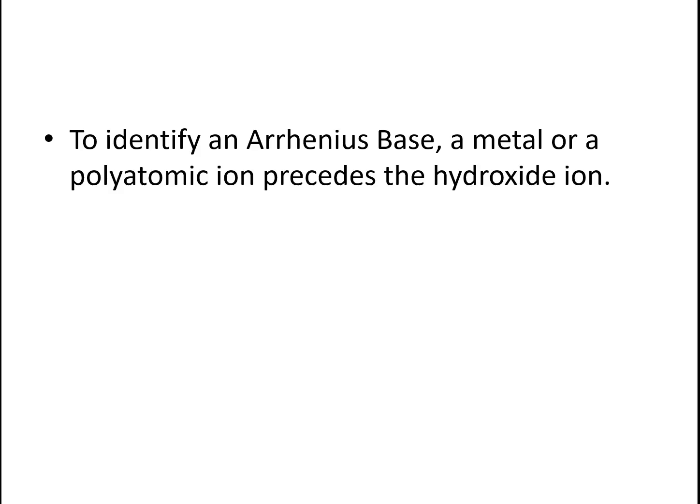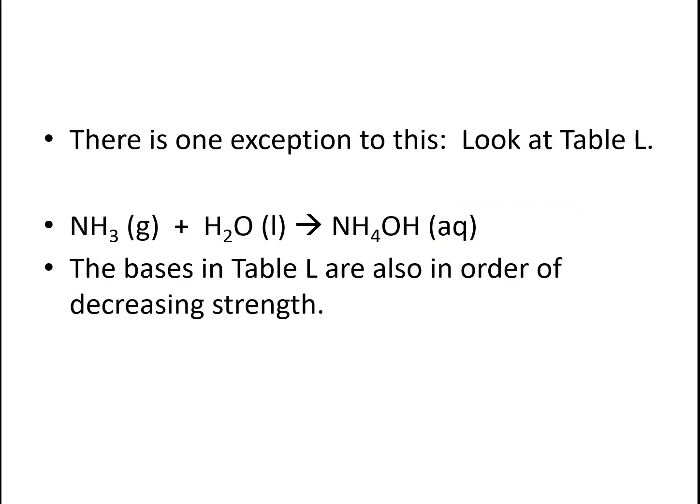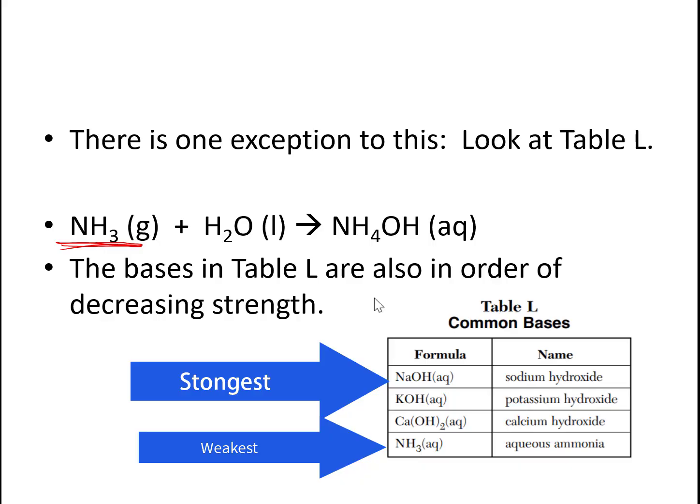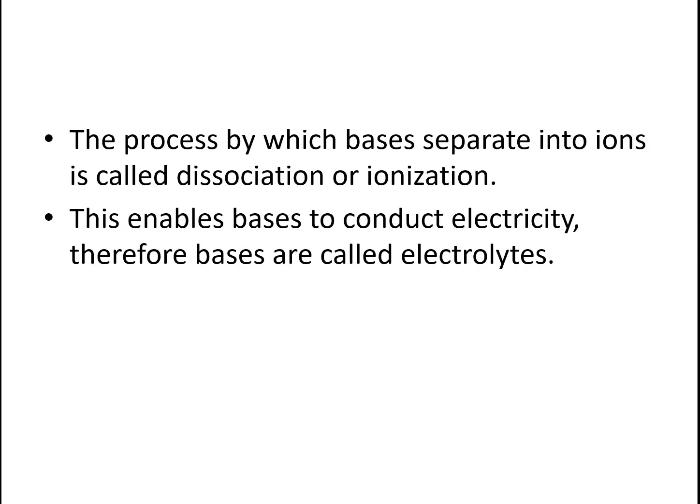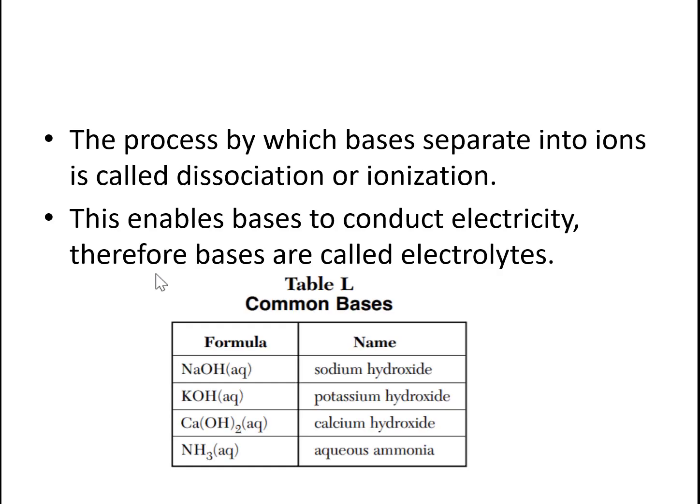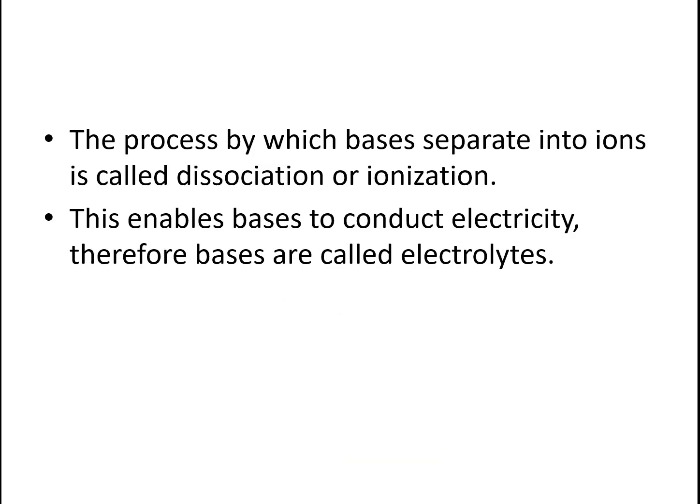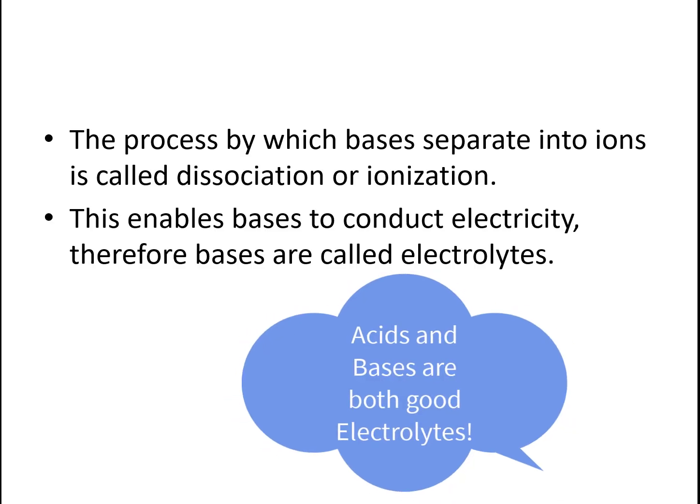To identify an Arrhenius base, most of the time it's a metal or a polyatomic ion attached to a hydroxide ion. Your exception is ammonia. Ammonia doesn't have its own OH, but you do find it on table L, and that's an excellent place to look. The bases in table L are also found in order of decreasing strength—strongest at the top and weakest at the bottom. All the bases in table L dissociate into ions, enabling them to form mobile ions and conduct electricity, and thus they are also electrolytes. Bases and acids are both good electrolytes.